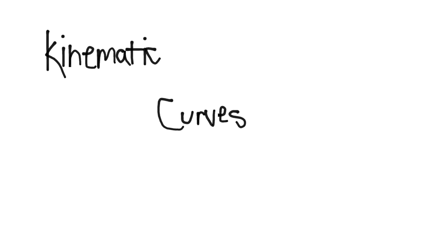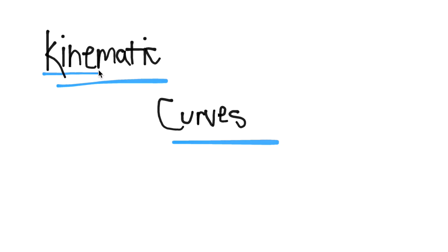Today we are going to be talking about kinematic curves. Before we get into how to do that and how to analyze all that, first I'm going to talk about what these things even are. Kinematic has the base of kinetic, which means movement, so kinematic basically means describing movement with diagrams and words. With curves — in physics we do define curves as a bent line, even though you may see this as more of an oxymoron.